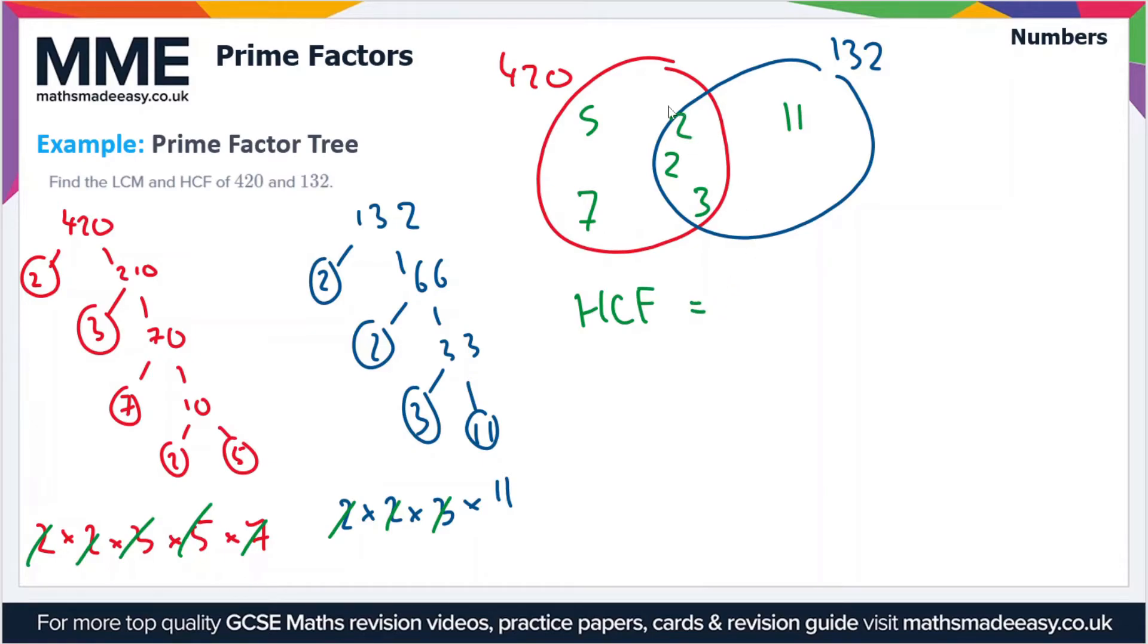To find the highest common factor, all we do is multiply the numbers in the intersection together. That's 2 × 2 × 3. So 2 times 2 is 4, 4 times 3 is 12. The highest common factor is 12.